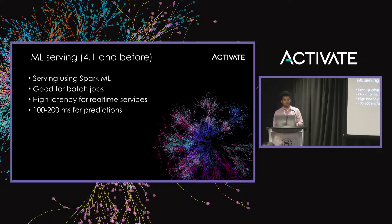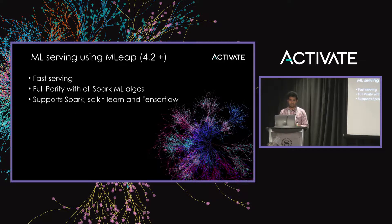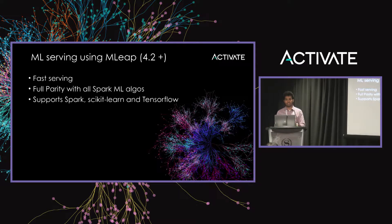Before Fusion 4.1, we used Spark ML throughout for predictions. That meant we couldn't work with any other frameworks, and Spark ML is good for batch jobs or indexing time, but it has really high latency — 100 to 200 milliseconds — which is not ideal for real-time use. Coming in Fusion 4.2, we are going to use MLEAP for our predictions. MLEAP has full parity with Spark algorithms, so there's no problem there, and it also supports external libraries.